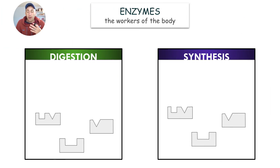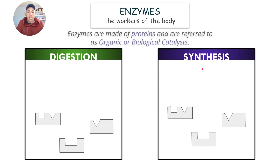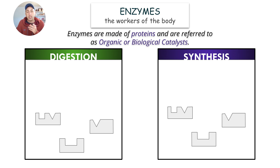Enzymes are the workers of the body. They do digestion — taking things apart — and synthesis — putting things together. Enzymes are made of proteins and are referred to as organic or biological catalysts, because they are made by living things and make all the different chemical processes occur.